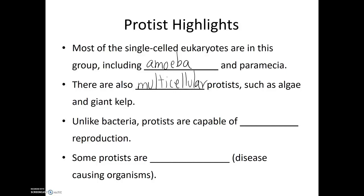Now unlike bacteria, protists are capable of sexual reproduction. Some protists are pathogenic, meaning they are disease-causing. In fact, in an earlier video about massive fish die-offs, protists were the culprit causing those fish to die. Occasionally you'll also hear reports of individuals swimming in pond water or lakes or streams where water gets splashed up their nose, and amoeba may enter their body. Normally amoeba are not dangerous, but if they end up traveling to the brain, it can cause amoeboid meningitis, which could potentially be a fatal infection. That's all for this video — in the next video we're going to talk about plants and fungi. See you then!